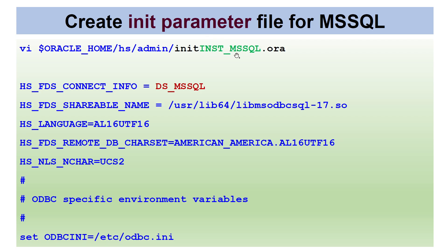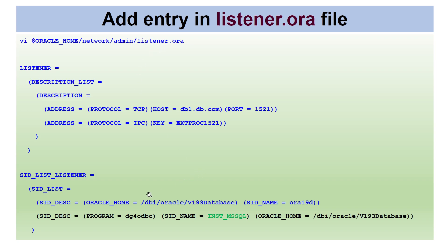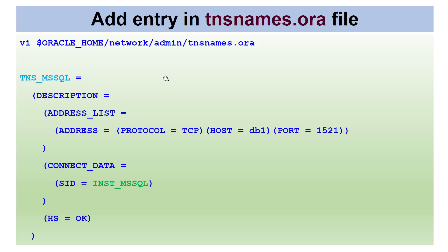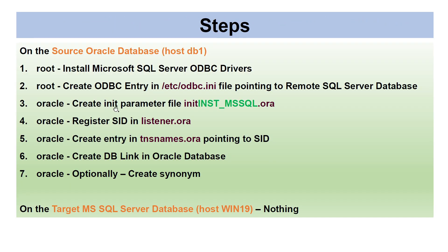After creating the init parameter file, we use that SID to register statically in listener.ora using the DG4ODBC program under Oracle Home. Then we create a TNS entry in tnsnames.ora pointing to the same SID. The TNS entry name is your choice. Once these three Oracle-user steps are complete, you are ready to create the DB link.